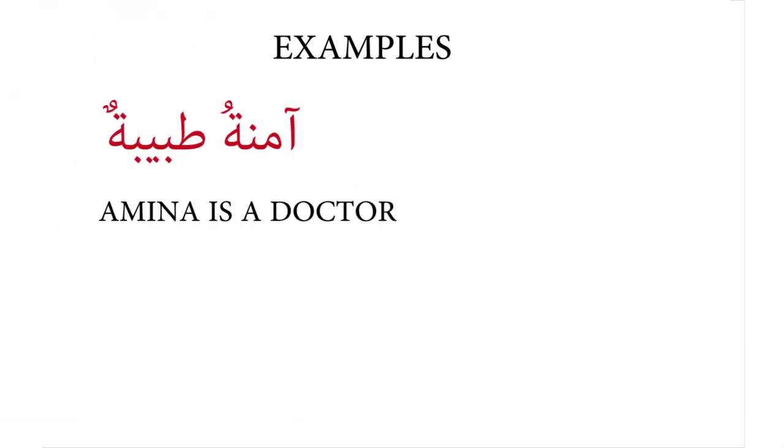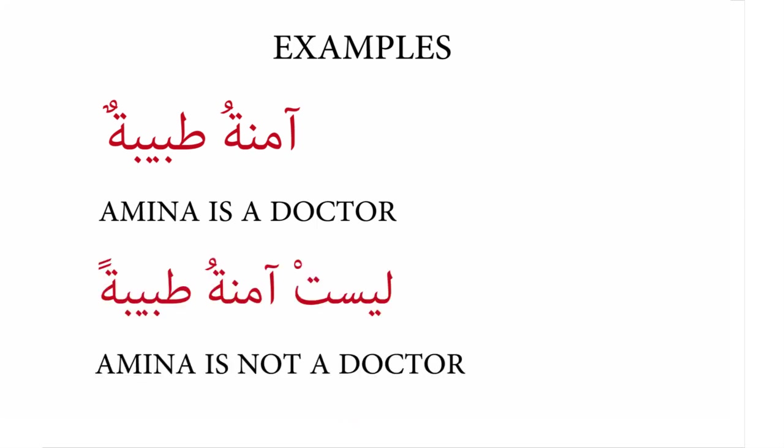Example three: aminatu tabibaton — 'Aminah is a doctor.' Aminatu is a female name, so it only takes one vowel marker — in this case a damma — and tabibaton takes tenween damma. When we add leysa, we use leysit because aminah is a female. Putting leysit at the beginning: aminah becomes isam leysa and tabibah becomes khabar leysa. Aminah retains one vowel marker. In leysit aminatu tabibatan, the voweling on tabibah changes from tenween damma to tenween fetah. Because it's a feminine noun, we don't add that extra aleph.